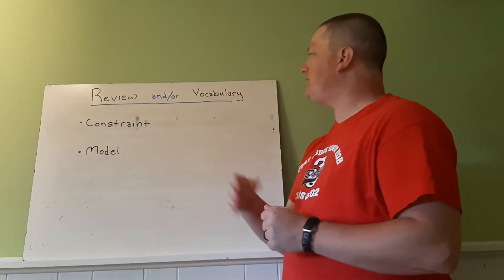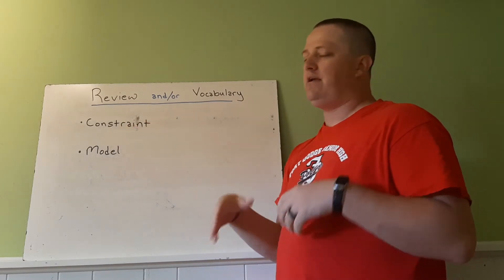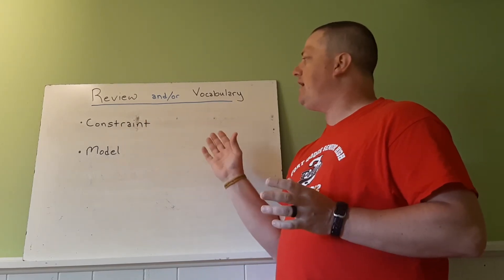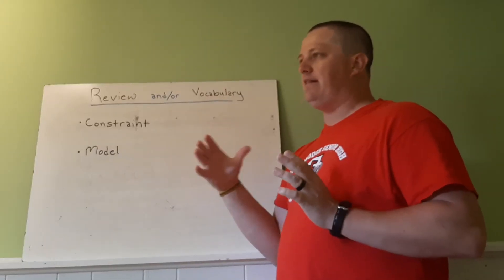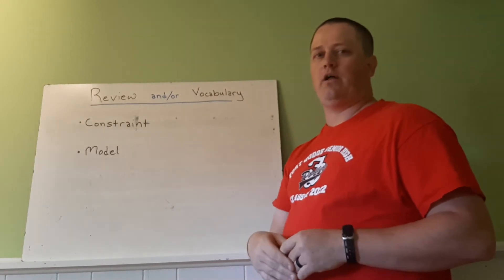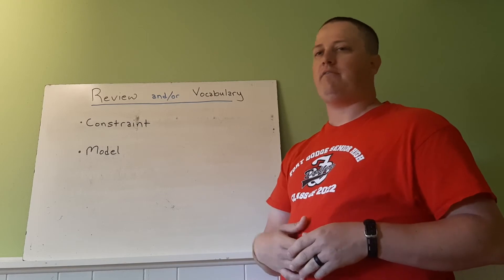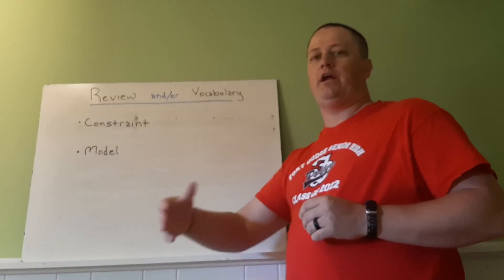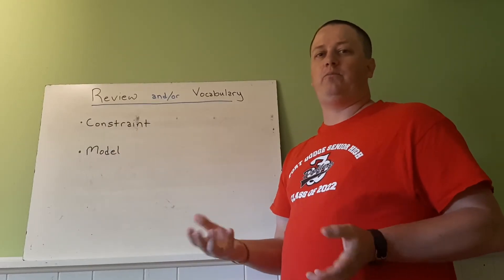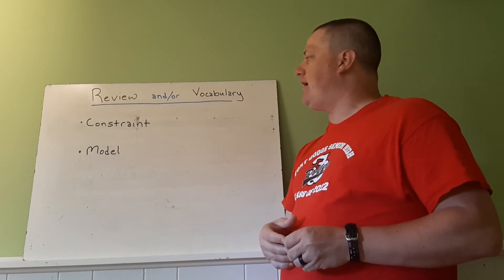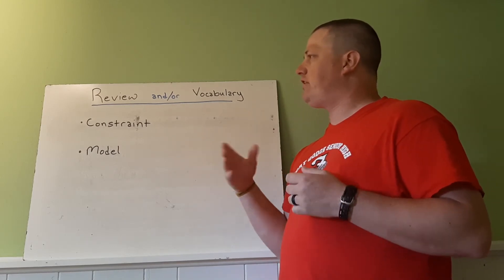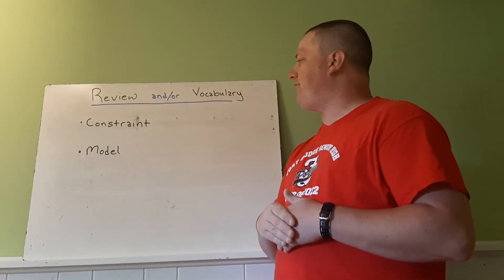Our vocabulary words are still constraint. Remember, a constraint is something that limits what is going on. It might limit the type of number, whether they're positive or negative. It might limit whether decimals are allowed or not. So just think of the constraints and how everything's limited.